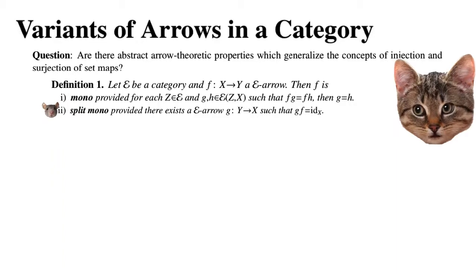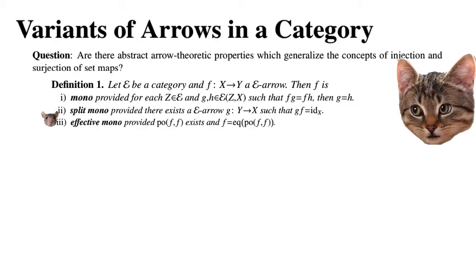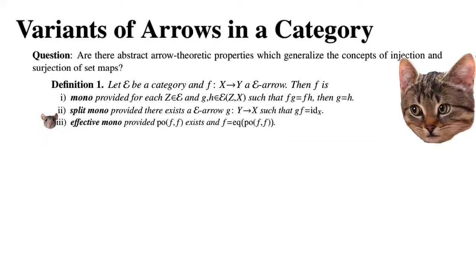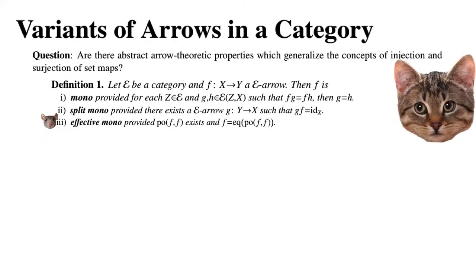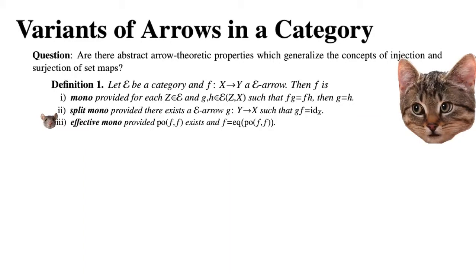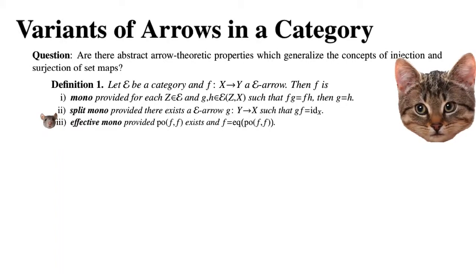We say that F is effective mono provided that the pushout of F and F — sometimes called the co-kernel pair — exists, and moreover that F is the equalizer of the pushout of F and F. So F equalizes its co-kernel pair.